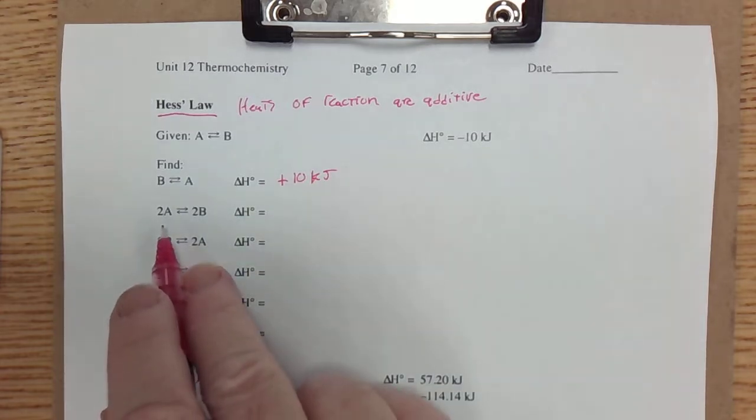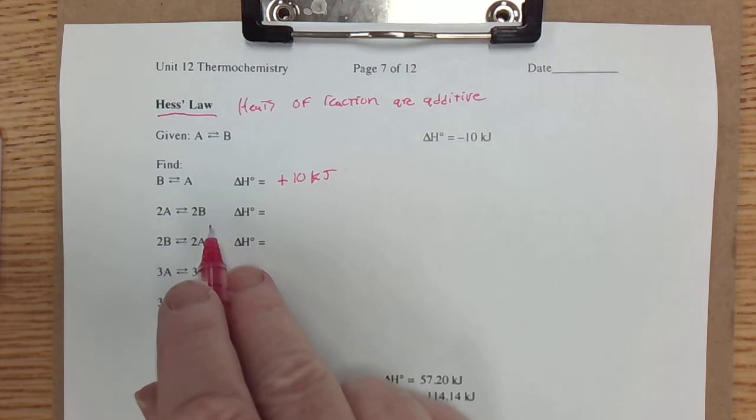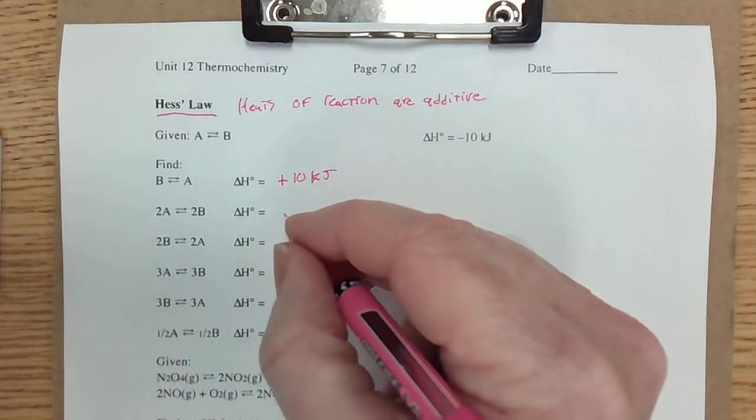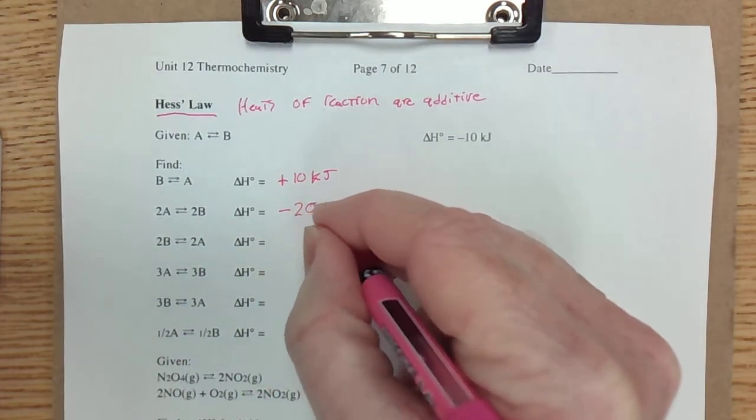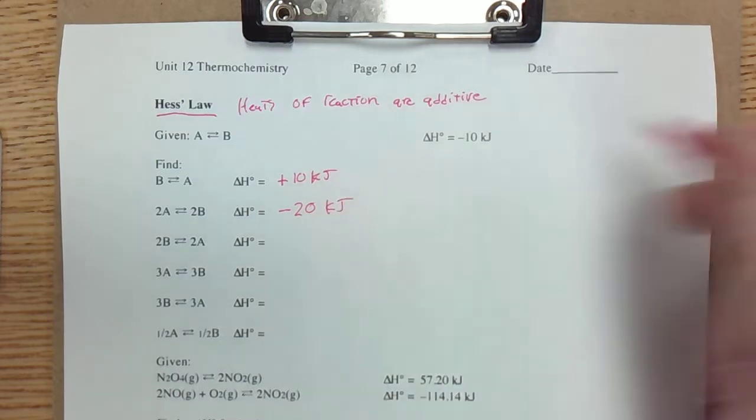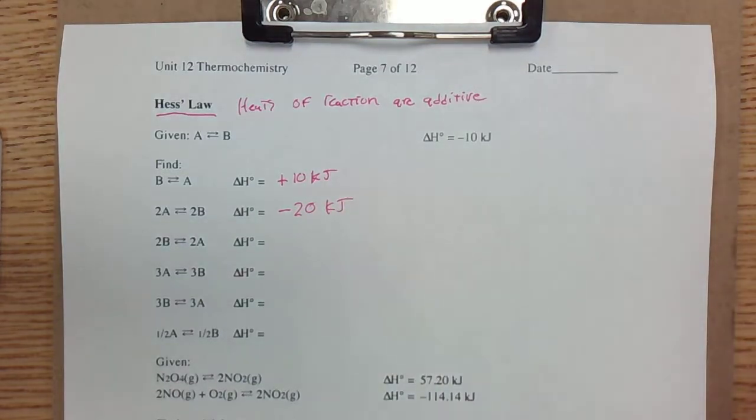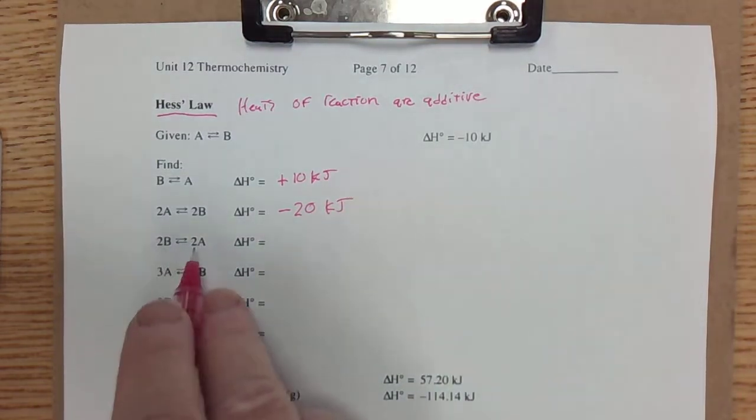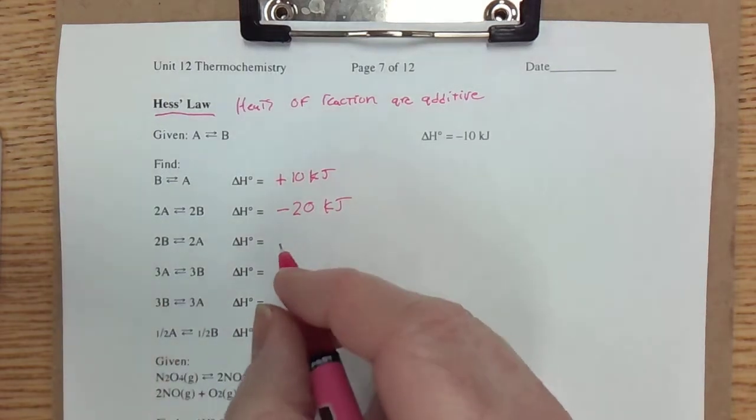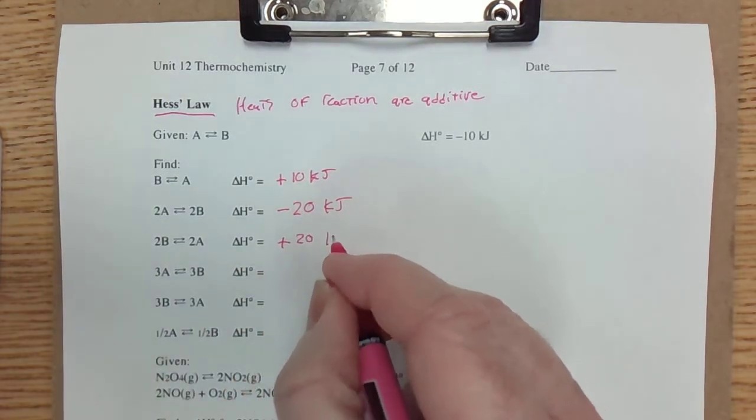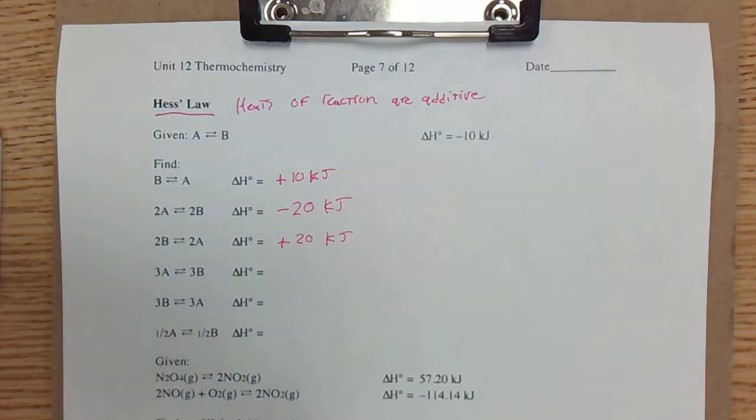Now, what if 2A turns into 2B? We've doubled the amounts, which means we're going to double the heat, negative 20 kilojoules. What if 2B turns into 2A? That's the reverse reaction. That would be positive 20 kilojoules.